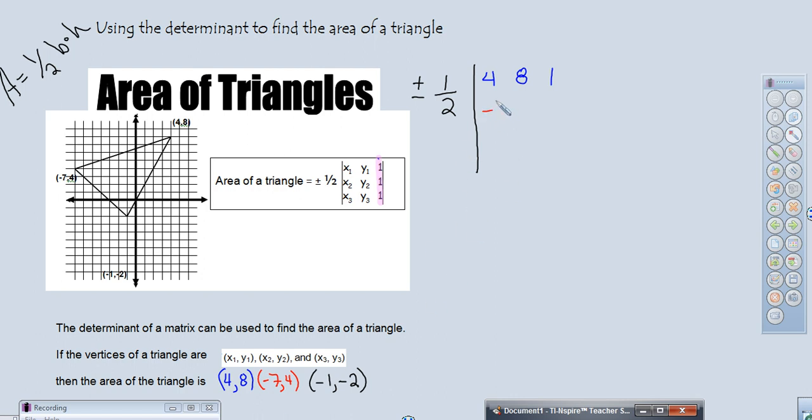We have X2, Y2, negative 7, 4, and a placeholder 1 to make our matrix square. And last but not least, we have negative 1, negative 2, and a placeholder 1. So now we have our numbers placed into our algorithm for the determinant so we can find the area.